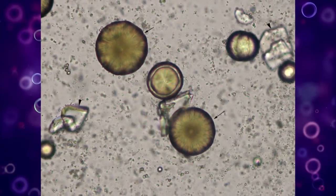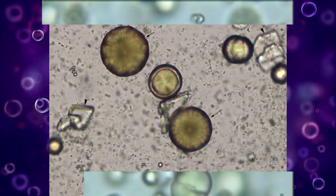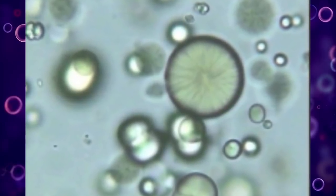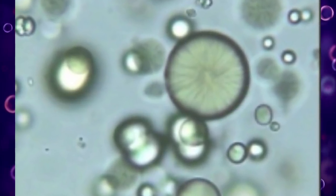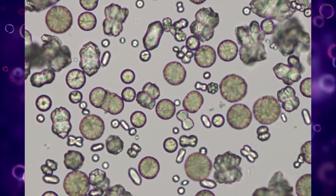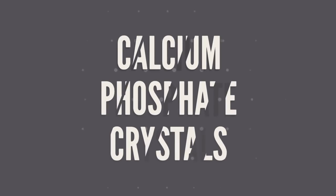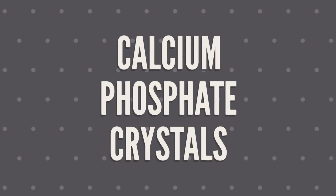Calcium carbonate crystals are yellow to colorless dumbbells or spheres with radial striations, found in alkaline urine. They are usually large crystals and can be readily observed at low magnification.